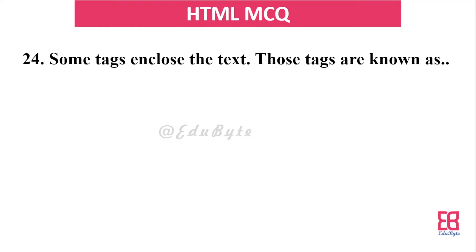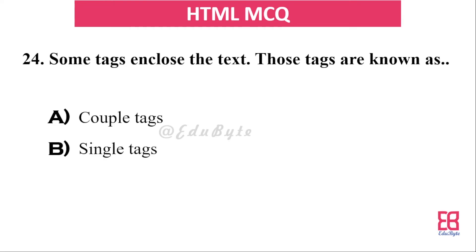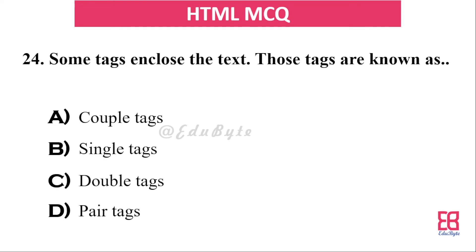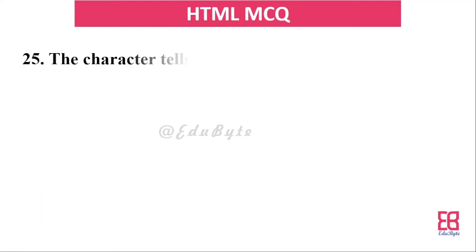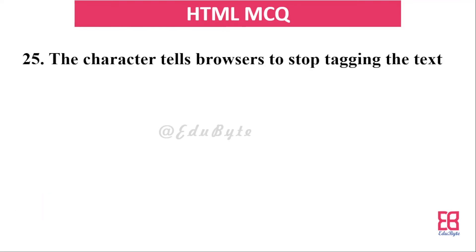Question twenty-one: HTML tags can be single tags or double tags. What are tags that come in pairs called? The correct answer is pair tags — tags that have both an opening and closing tag are called pair tags.